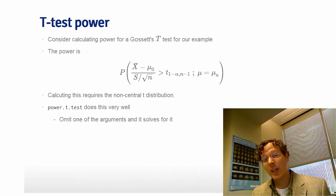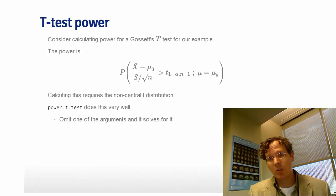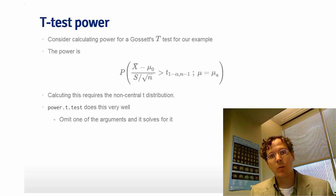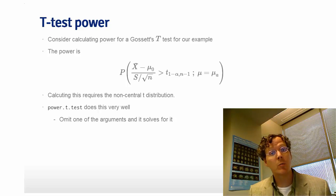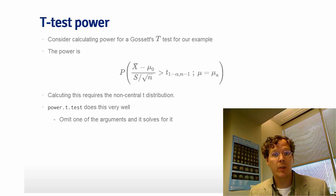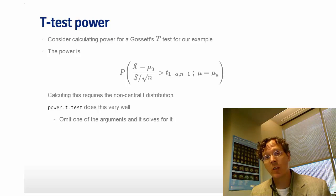So we never actually calculate power in the way that I've described in the previous slides. That's for understanding the concepts, and we assumed we knew sigma and the data were either Gaussian or that the sample mean could be believed to be Gaussian because of the central limit theorem.